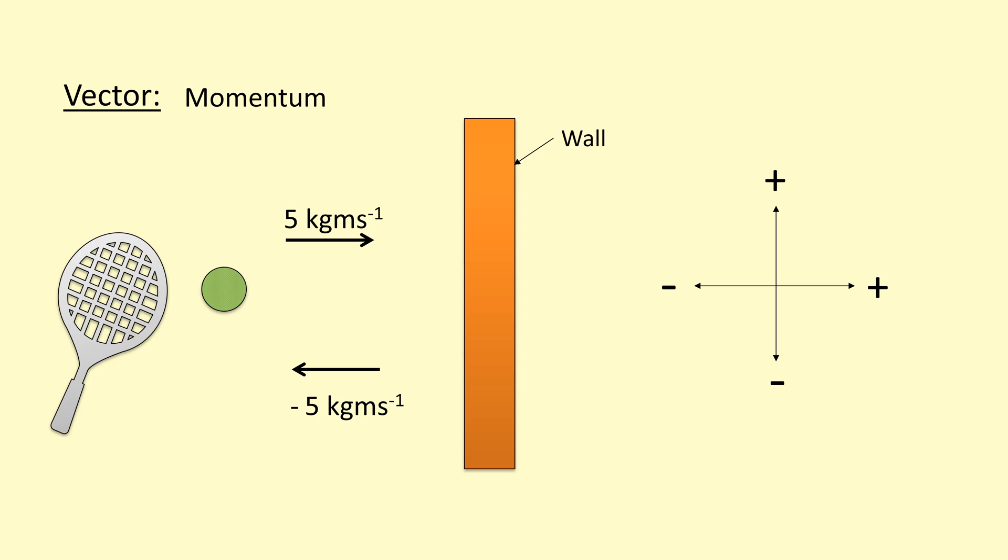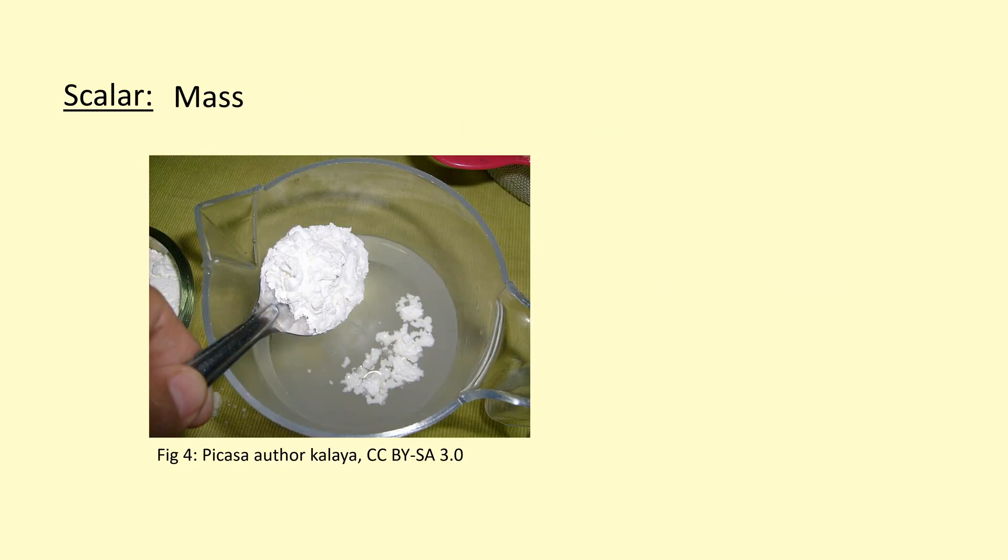When it comes to adding scalars it's pretty straightforward. For example in this case you've got 100 grams of water and you've got 20 grams of powder you're adding to it so it just becomes 120 grams. It's not that complicated, as long as you have the same units you can just add them and also with multiplying it's also very straightforward.